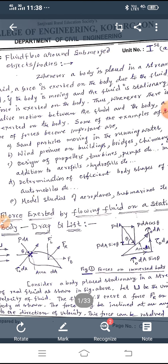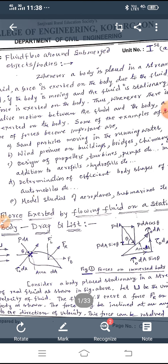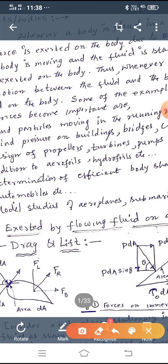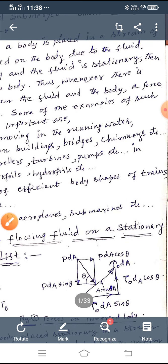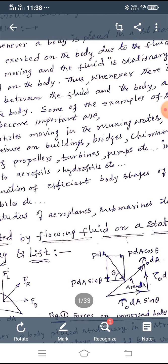When a body is placed in a stream of fluid, a force is exerted on the body due to the fluid, even though body is moving and the fluid is stationary or vice versa. For example, sand particles moving in the running water, wind pressure on buildings, bridges, etc.